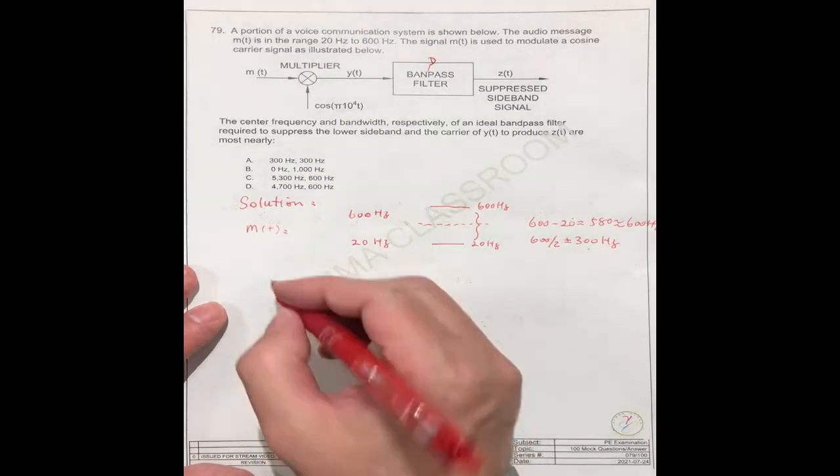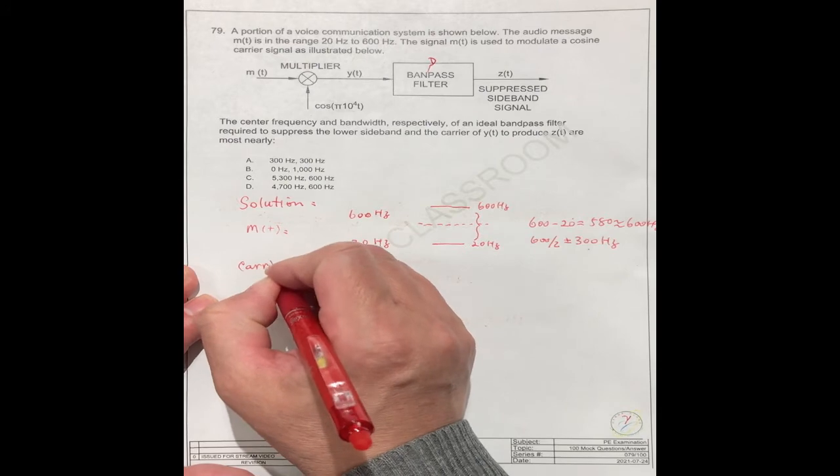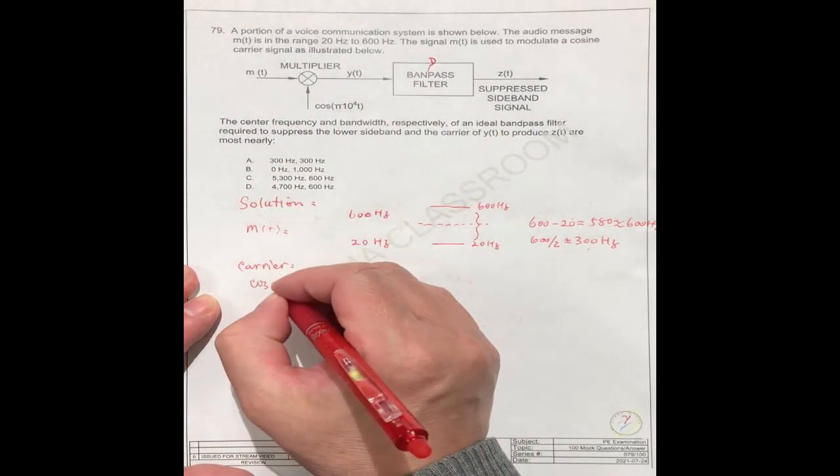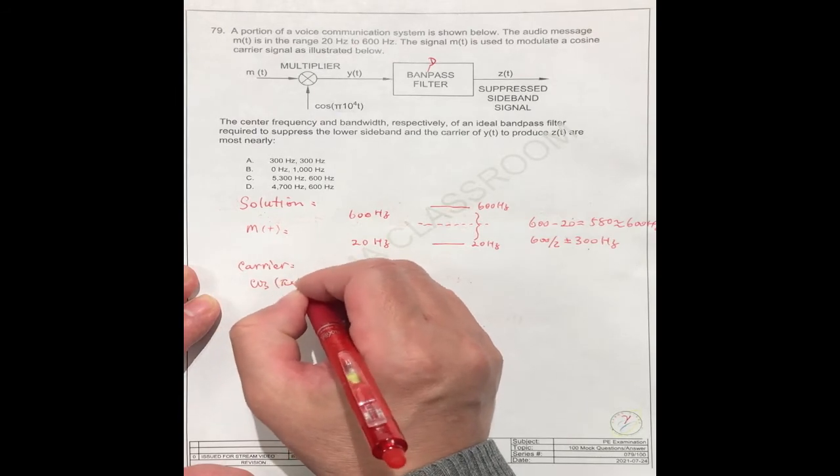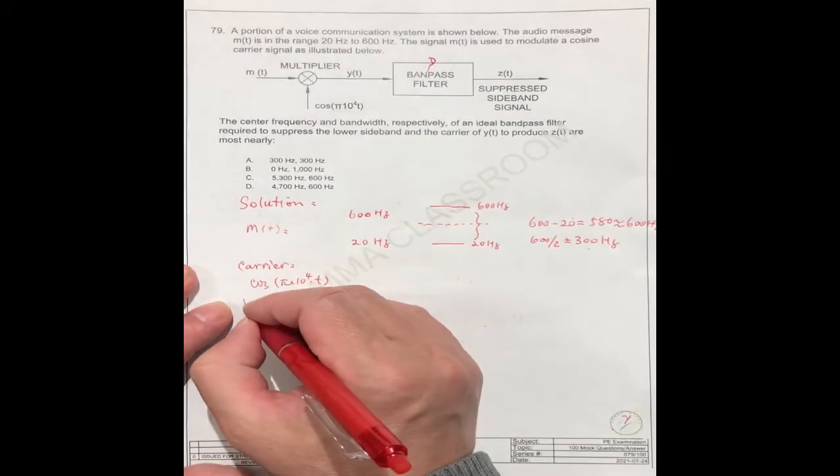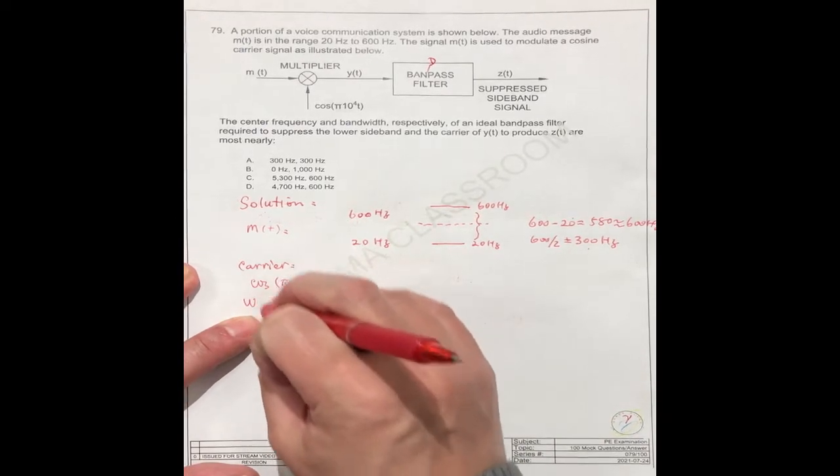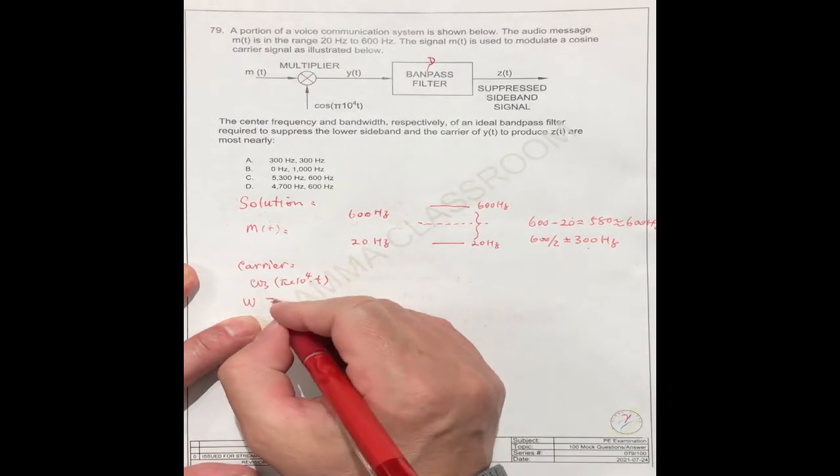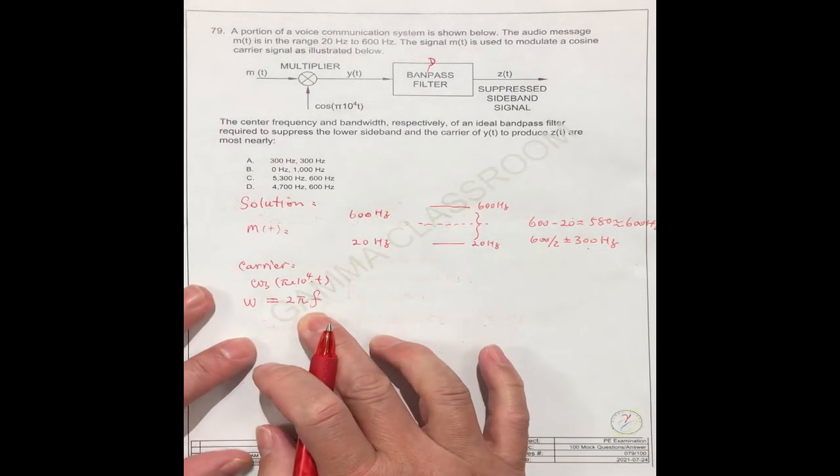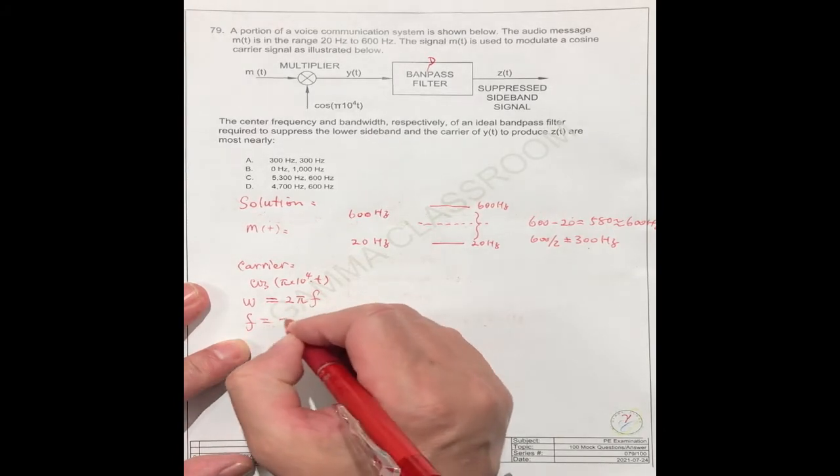So for the carrier, we know this is cosine pi times 10 to the power 4 times t. We know the formula: omega t, the omega should equal 2 pi f. F is the frequency. So f equals omega over 2 pi.